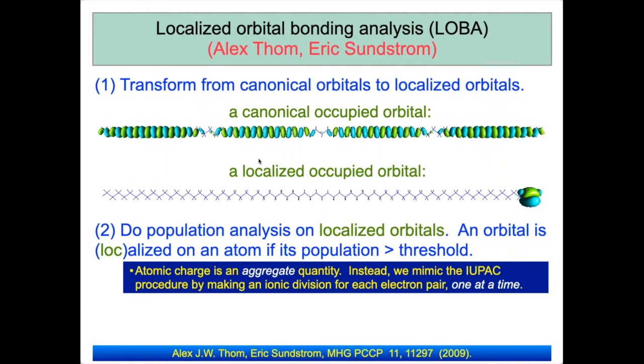After the localized orbitals are formed, if a bond orbital's population on the metal doesn't meet a threshold, we're forced to make a covalent division of charge. Finally, the metal oxidation state is formed as the atomic number minus the number of electrons declared to be localized on that atom.